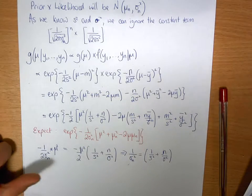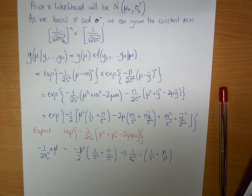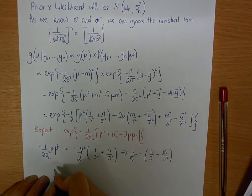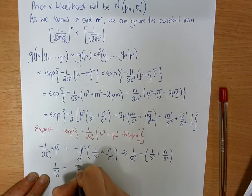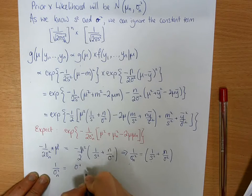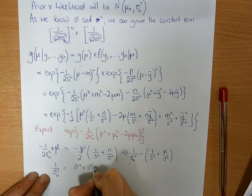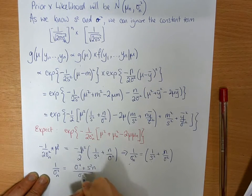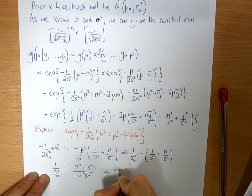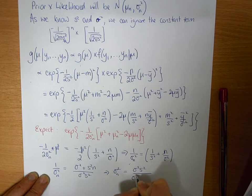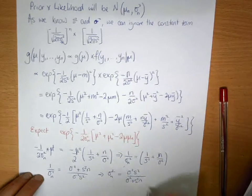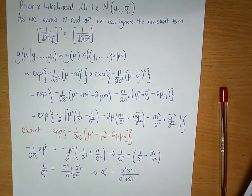Note that 1 over sigma_n squared can also be written as (sigma squared plus s squared n) divided by (sigma squared s squared), which implies that sigma_n squared equals sigma squared s squared over (sigma squared plus s squared n). This alternative form will become clear later on as to why we've bothered to derive it.